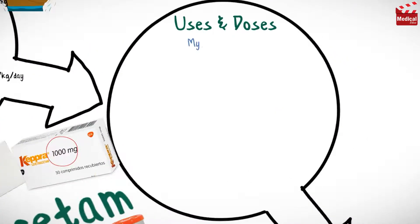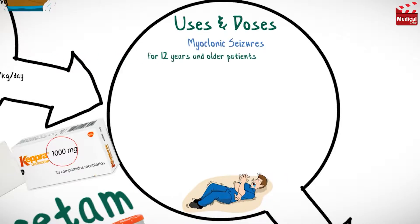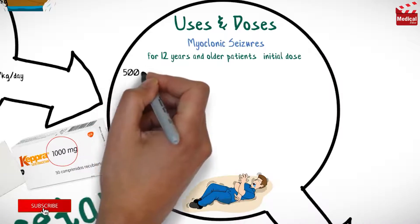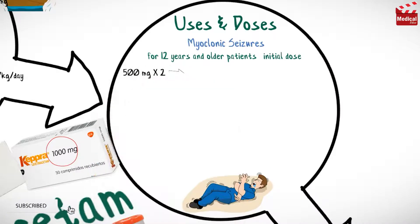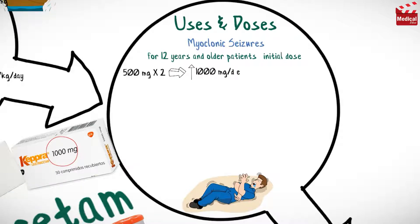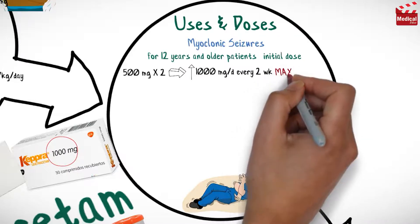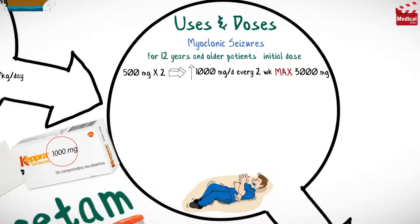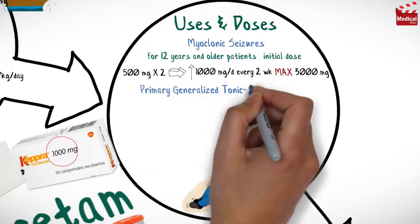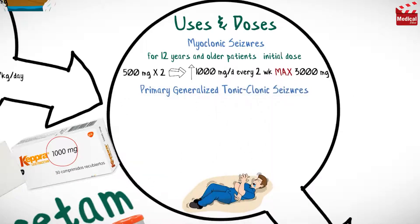Levetiracetam is also used in the treatment of myoclonic seizures for patients 12 years and older. The usual initial dose in this case is 500 milligrams twice daily, which may be increased by 1000 milligrams per day every two weeks to the recommended daily dose of 3000 milligrams.